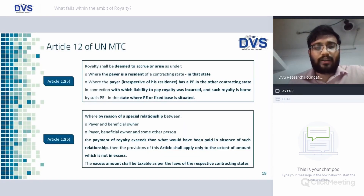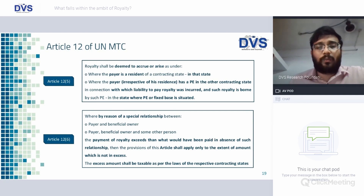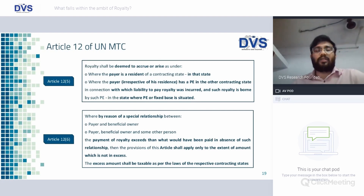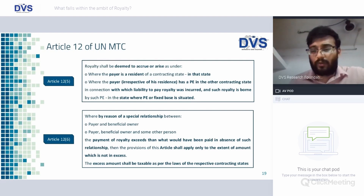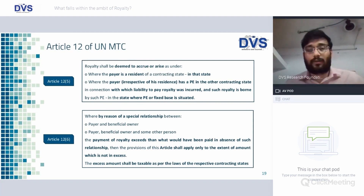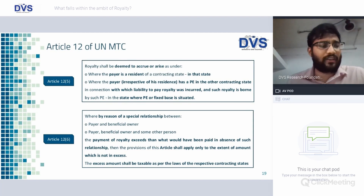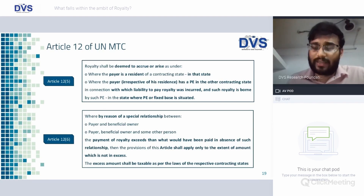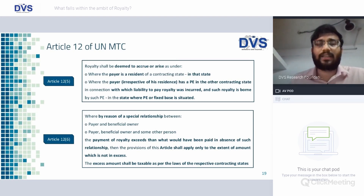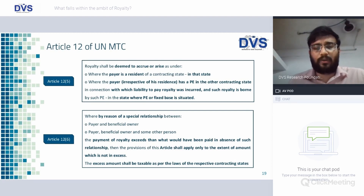Articles 12(4) and 12(5) address cases where the recipient of royalty has a fixed place of business in a state where the royalty was effectively connected with that PE — in such a case taxability happens in that state. Article 12(6) deals with a special relationship — referring to a relationship which triggers transfer pricing. In such a scenario, if the royalty payment is more than the arm's length price, the excess amount shall be taxable — for example, if the arm's length royalty is 100 and actual payment is 120, then 20 shall be taxable as per the laws of the respective contracting state, and Article 12 provisions apply only to the royalty of 100.